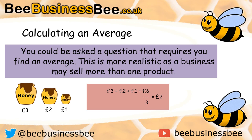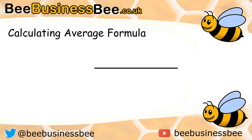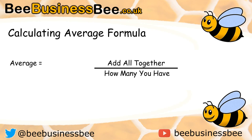Hopefully you have calculated the answer would be £2. Firstly you would have to add together all the selling prices: £3 plus £2 plus £1 gives you £6. You have got three different types of jars, so you divide that £6 by 3, which gives you the average selling price of £2 per jar. The formula is: add all the items together and then divide by how many you have. It is as simple as that.